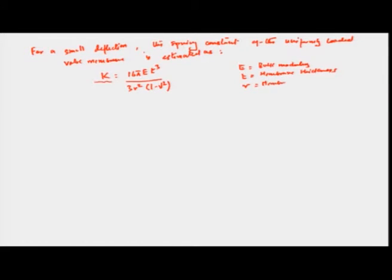R is the total radius of the membrane — the membrane radius — and ν is the Poisson's ratio of the material, in this case silicon. The Poisson's ratio has been given as 0.25, and we want to calculate the value of k for this particular problem.